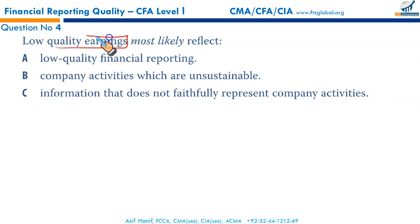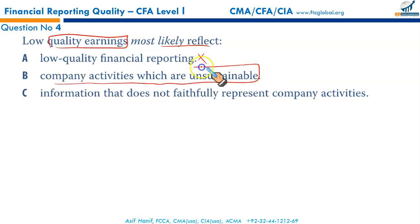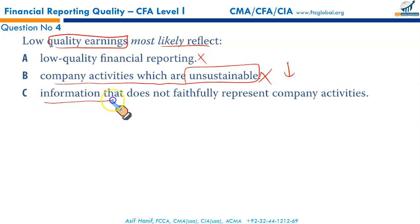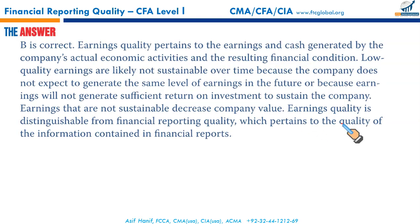Low quality earnings mean firm value will fall. Low quality earnings most likely reflect what? Not low quality financial reporting. Low quality earnings most likely reflect company activities which are unsustainable — unsustainable activities result in lower earning quality and low earning persistence, causing a fall in firm value. Option C — information that does not faithfully represent company activities — is low financial reporting quality, not earning quality. B is the correct option.